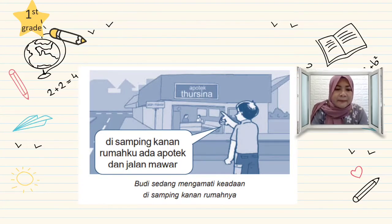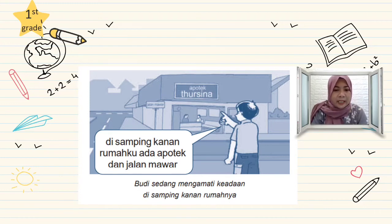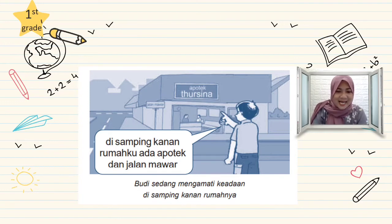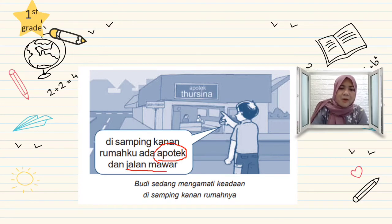Di samping kanan rumahku — masih rumah Budi. Tadi ternyata berhadapan dengan puskesmas, dan di samping kanannya ada lagi apotik, namanya apotik Tursina. Budi sedang mengamati rumahnya — di sebelah kanannya ada bangunan penting namanya apotik, itu juga bisa menjadi patokan. Ada apotik, berada di jalan Mawar.